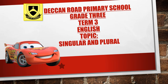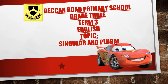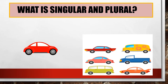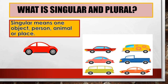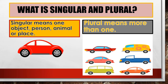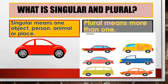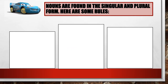Topic: singular and plural. What is singular and plural? Singular means one object, person, animal or place. Plural means more than one. Nouns are found in the singular and plural form. Here are some rules.